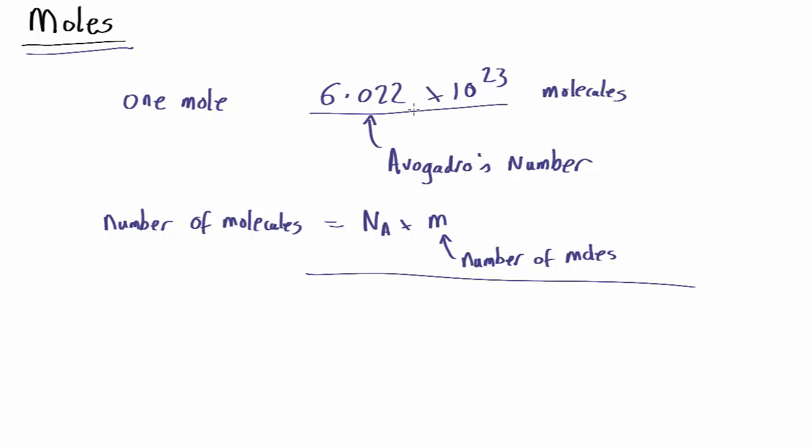So if you know the number of moles of something, you can just multiply by Avogadro's number to work out the number of molecules. But how do you work out the number of moles? Well, you could just work out how many atoms or molecules there are, like we've talked about in the last two videos, and divide by Avogadro's number. But there's a shortcut.